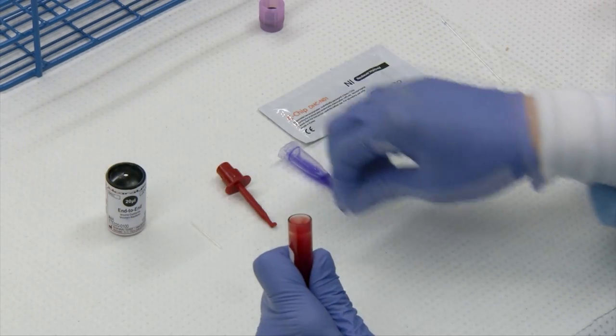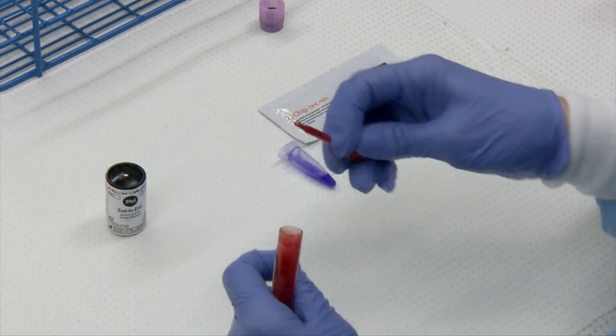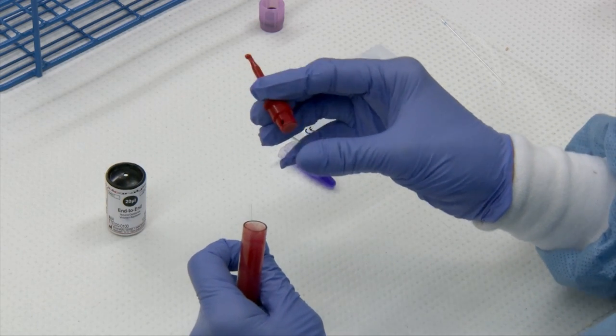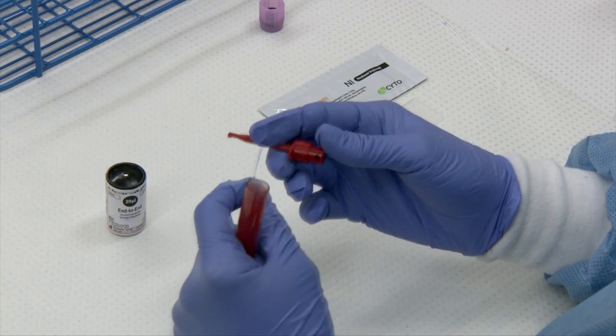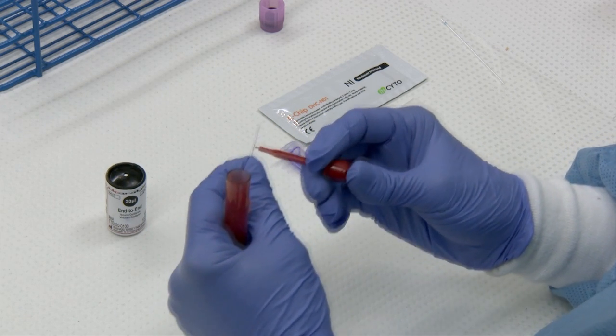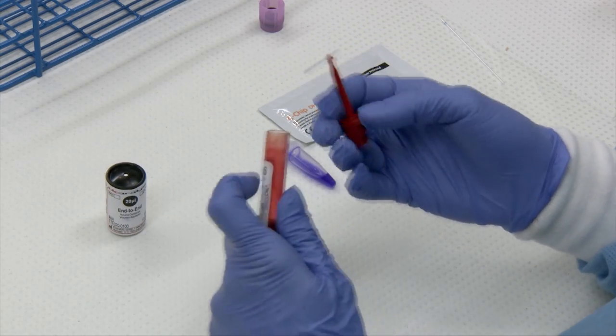The kit comes with 20 microliter pipettes, and you'll need to also have a pipette holder because the pipettes are quite small to be able to do it by hand. So you insert the pipette tip into the hook of the holder.